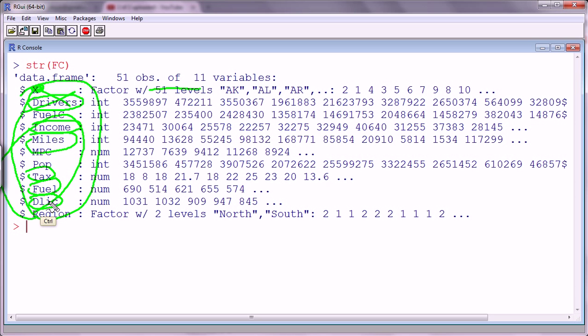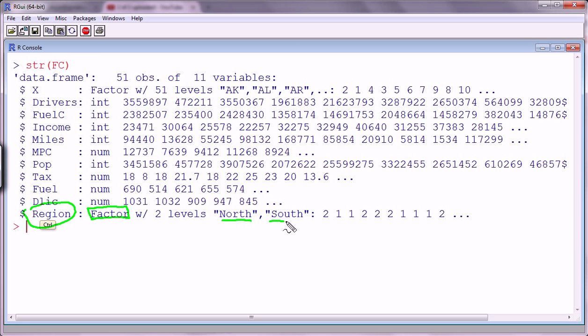And the only thing that we ended up using in addition to the 5 in part 2 was region. And the reason why I wanted to include this one particularly was it's a factor, it's a categorical feature. So I wanted to include it so you see that it's well handled by the LM function.